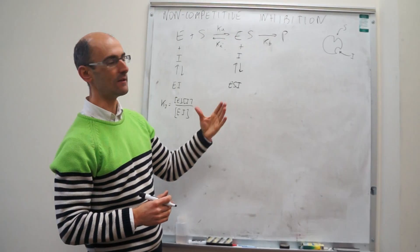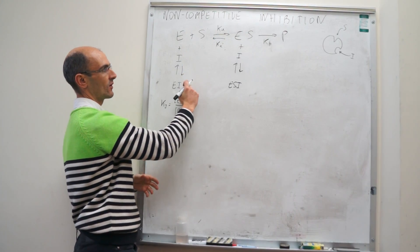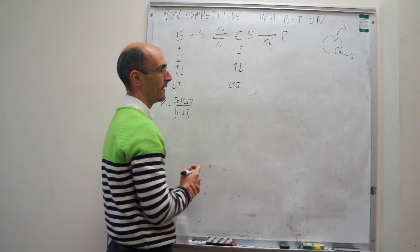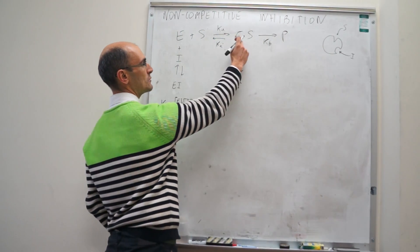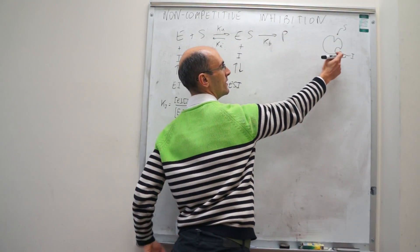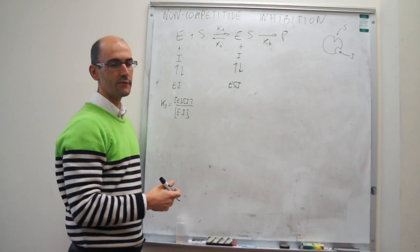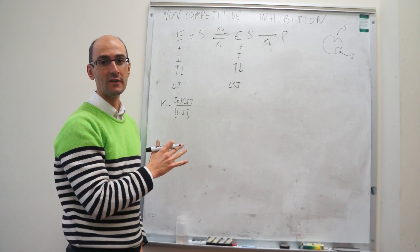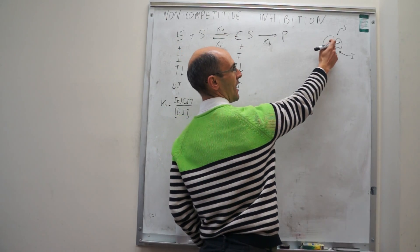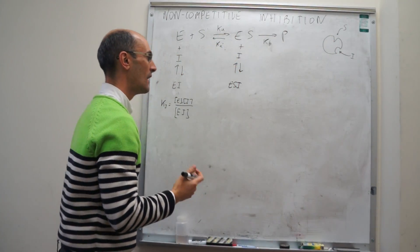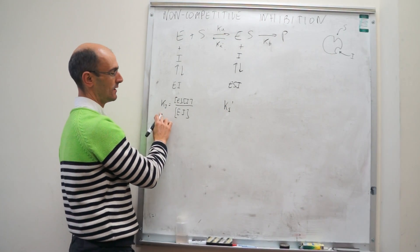Wherever there's an enzyme in this mechanism, the inhibitor can bind to it — whether it's free enzyme or the enzyme-substrate complex. Something that could be argued is whether having the substrate bound is going to affect the binding constant for the inhibitor. For the sake of generality, we're going to assume that the inhibitor binding to the active site might be affected by whether or not the substrate is there.